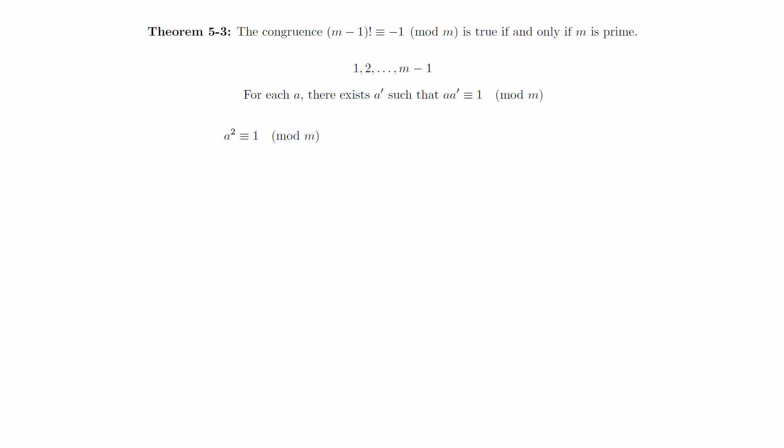If that's the case, then we have a squared is congruent to 1 mod m. In other words, m divides a squared minus 1, which can be factored. Since m is prime, we know that m must divide either a plus 1 or a minus 1, and this implies that a is congruent to plus or minus 1 mod m.